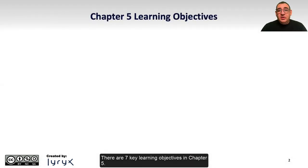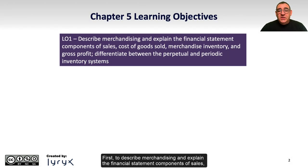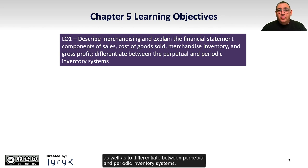There are seven key learning objectives in Chapter 5. First, to describe merchandising and explain the financial statement components of sales, cost of goods sold, merchandise inventory and gross profit, as well as to differentiate between perpetual and periodic inventory systems.